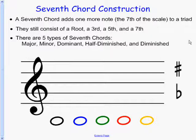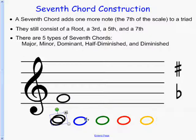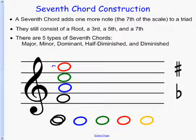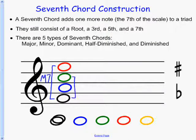Let's talk about the major one. We're going to take our key of F. We have an F, A, C — there's our triad — and then we're going to add an E. This is what is called a major seventh chord. The reason it's called a major seventh chord is because this is a major seventh interval, and this is a major triad. When you have a major triad and a major seventh, you have a major seventh chord.